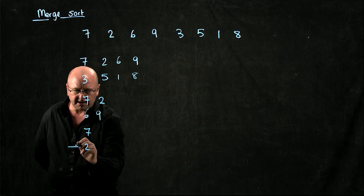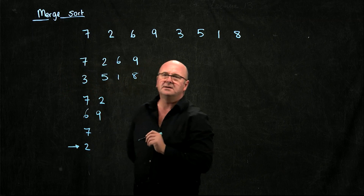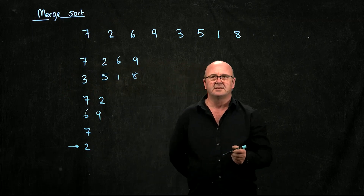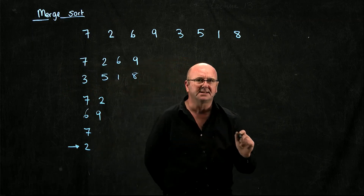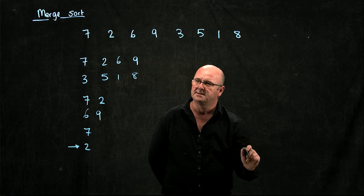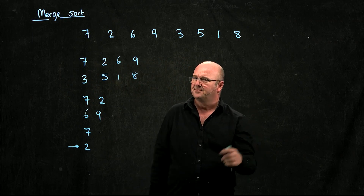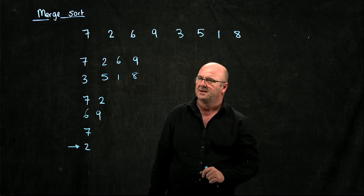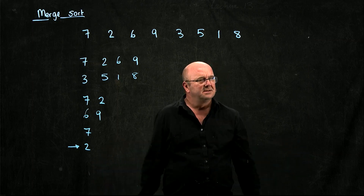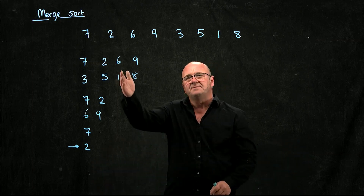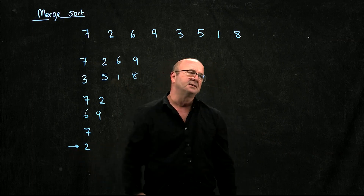A single element list is already sorted. The smallest thing is at the beginning, and the smallest thing is at the end, because there's only one thing in it, so it has to be sorted. It's brilliant. So all we've done is divide things in half, and we end up with our sorted list.